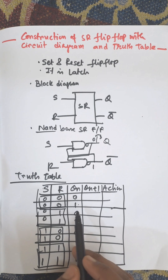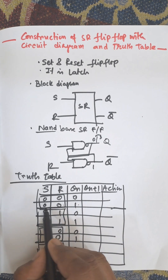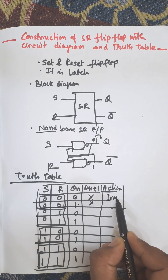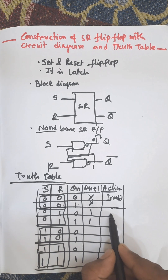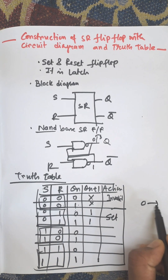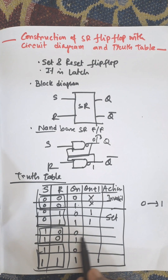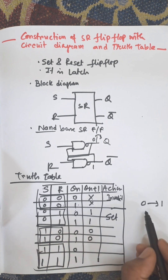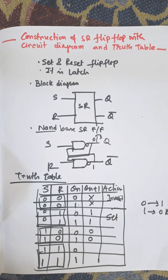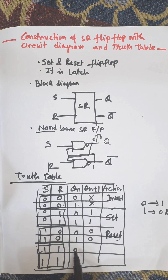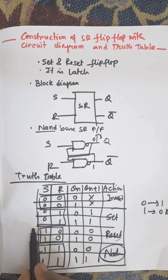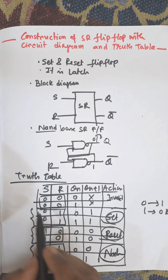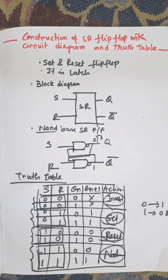For S=0, R=0 the action is invalid. For S=0, R=1: output goes from 0 to 1 and 1 remains 1 — this is the set action. For S=1, R=0: 0 remains 0 and 1 becomes 0 — this is reset. For S=1, R=1: there is no change, 0 stays 0 and 1 stays 1. For S=0, R=0 invalid; S=0, R=1 set; S=1, R=0 reset; and S=1, R=1 no change.